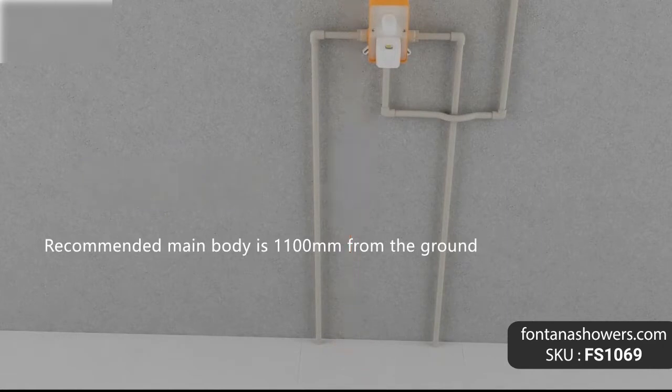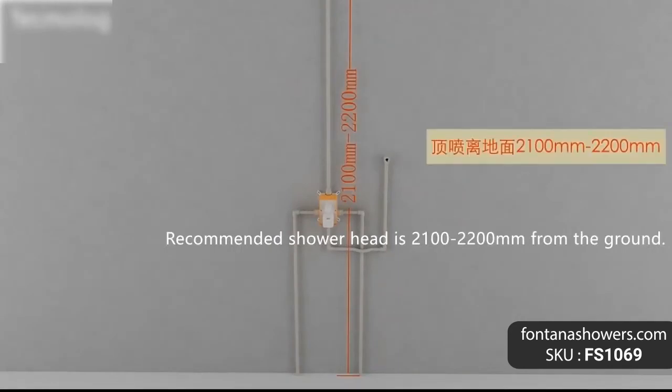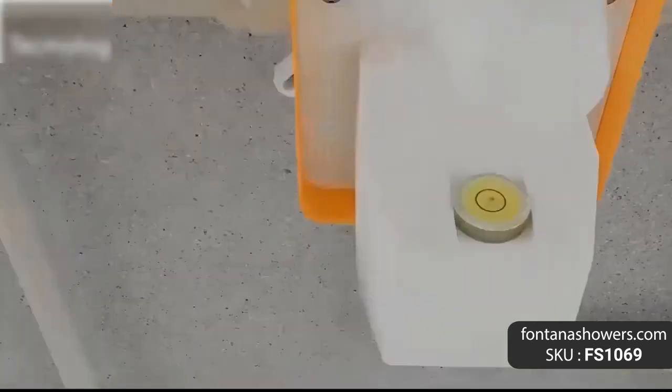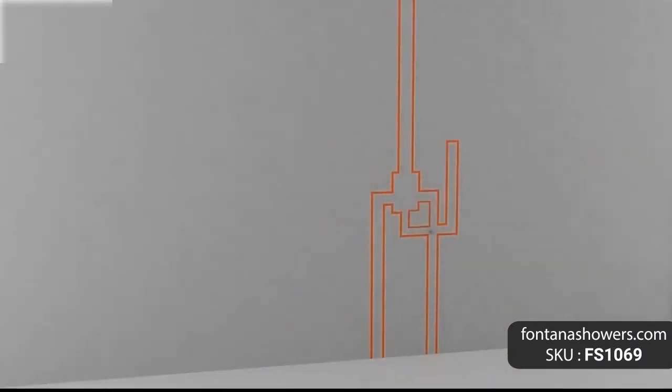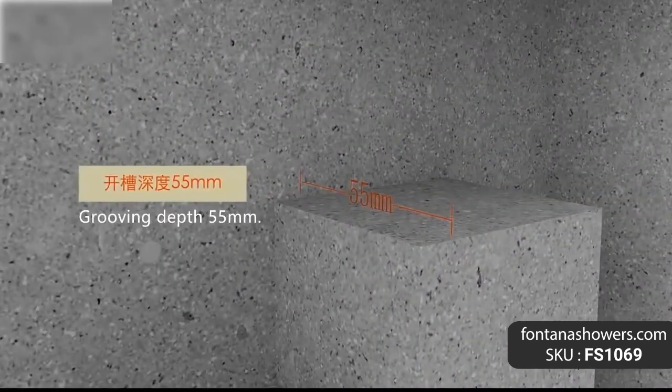Brand name: Fontana Showers, model number FS1069, type: shower set and shower mixer, style: contemporary, surface finish: light oil rubbed bronze, shower installation type: wall mount, control type: single holder dual control, shower head size: 7